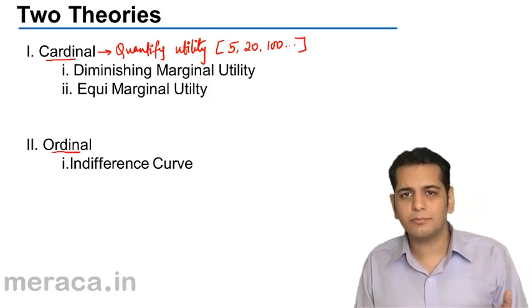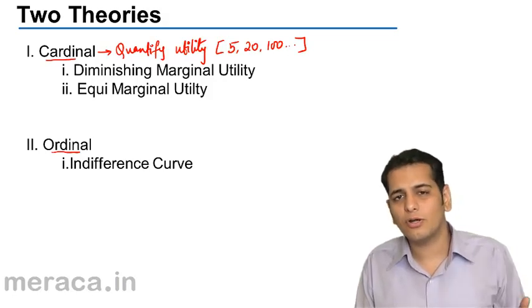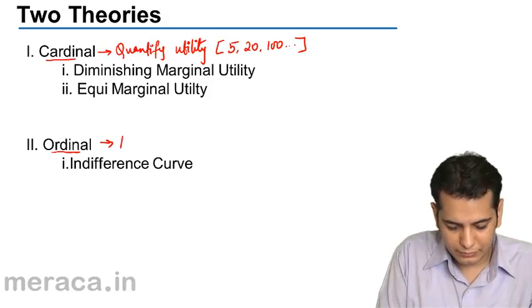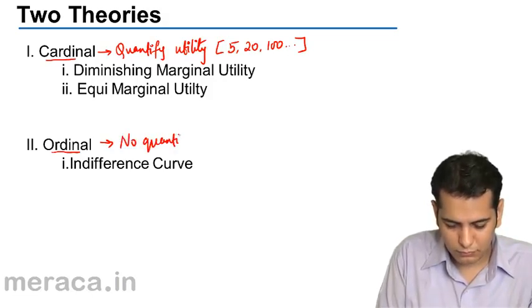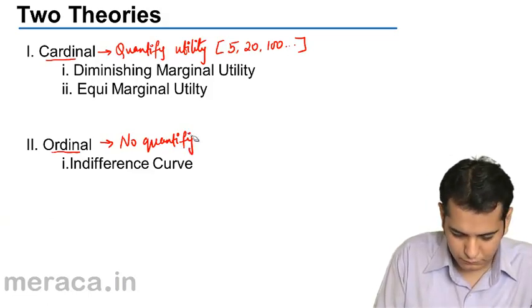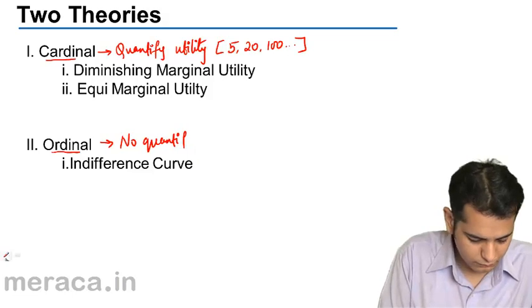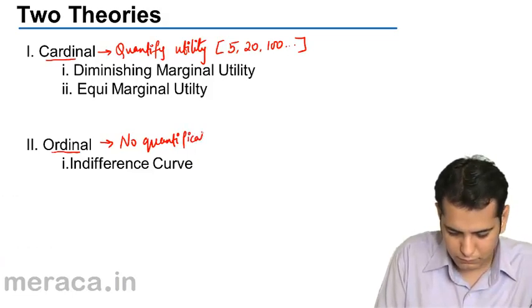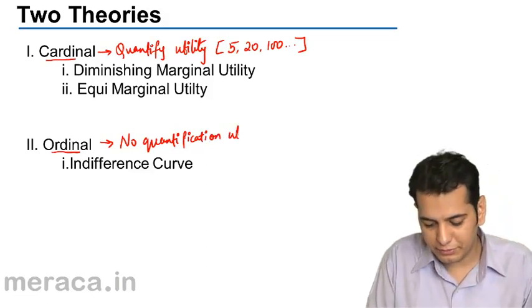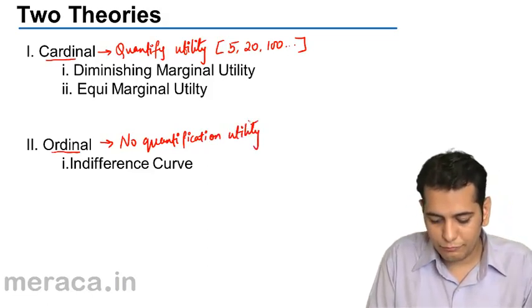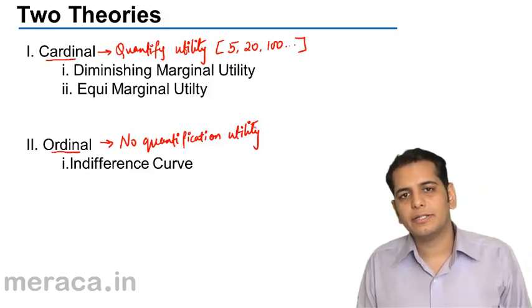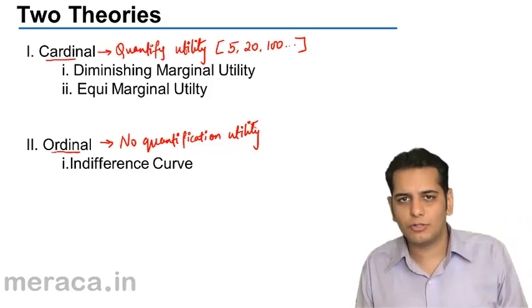However, under the ordinal principle, we do not quantify the utility. We only rank or give an order to the utility or utility derived from the commodities.